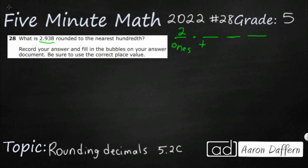Now, we've got the tenths place here — it's like the tens, but it's got the THS: tenths. That's where the nine is sitting. Here's the hundredths place, two places over. It's got a three sitting right there, which means that eight is sitting in the thousandths. So those first three digits beyond the decimal are tenths, hundredths, thousandths.